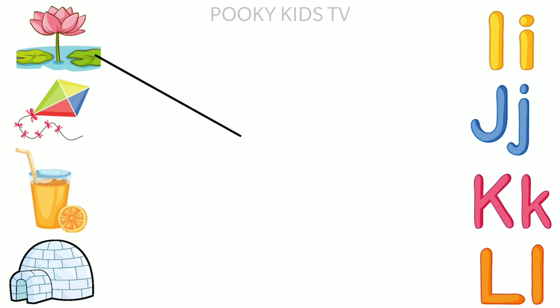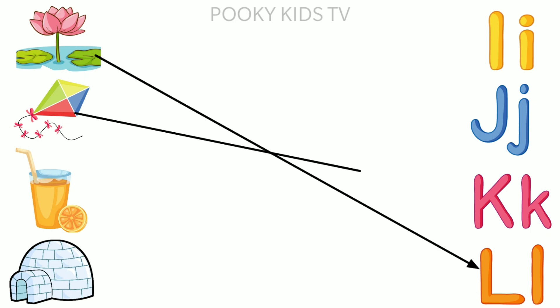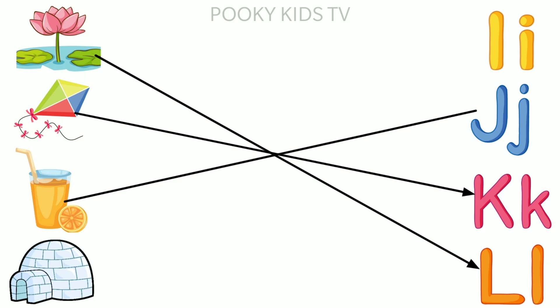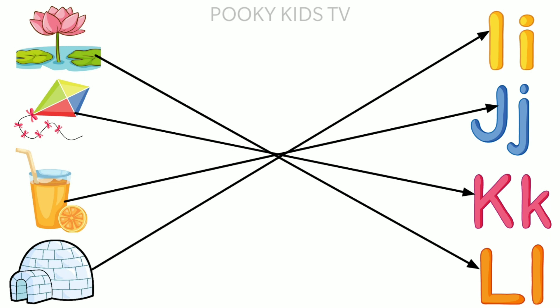L for Lotus. K for Kite. J for Juice. I for Igloo.